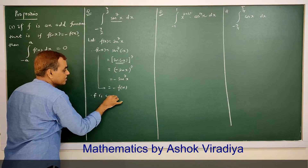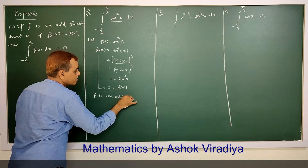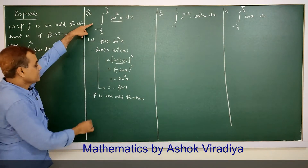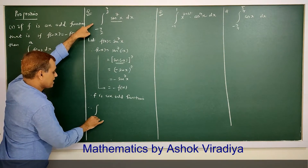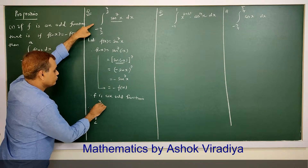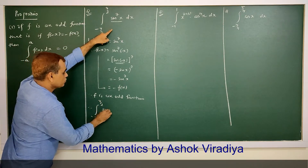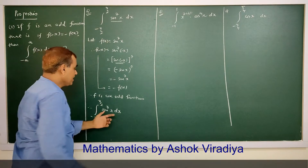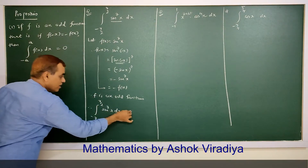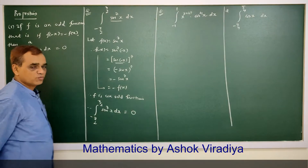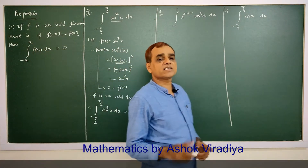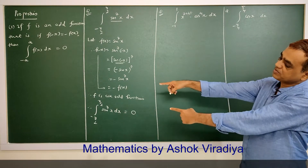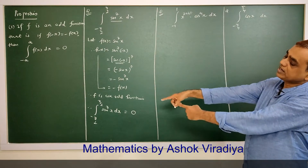So this function is an odd function. Therefore the definite integral of sin raised to 7(x) from minus pi by 2 to pi by 2 is equal to zero by this rule. Whenever f(minus x) is minus f(x) and upper and lower limits are opposite numbers, the integral is zero.